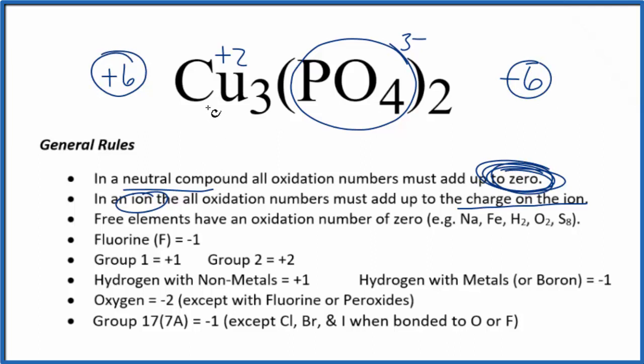So the oxidation number on the copper here in copper 2-phosphate is plus two. That's why we call it copper 2.